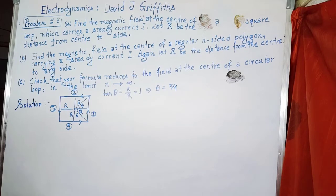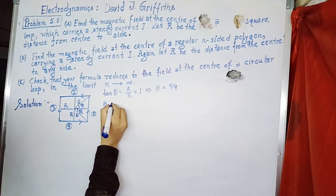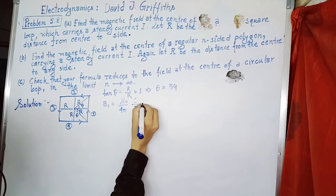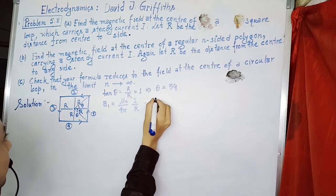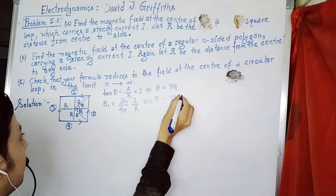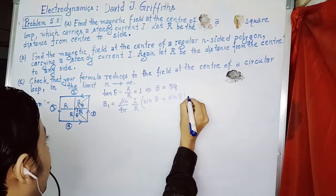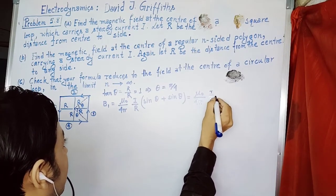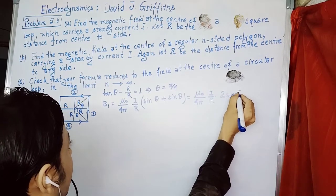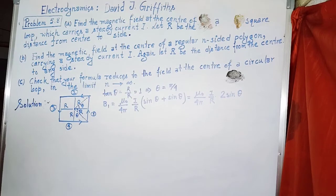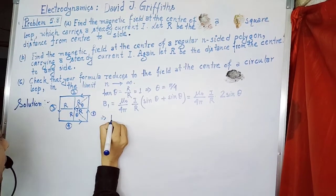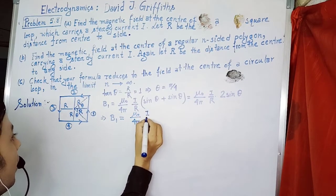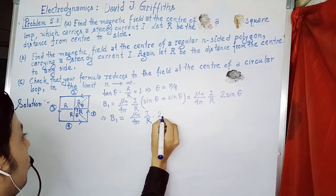The magnetic field produced due to the first segment, B₁, is given by the Biot-Savart result: μ₀ divided by 4π, times I upon R, multiplied by (sin θ + sin θ), because both angles are equal to θ. This gives B₁ = μ₀/4π · I/R · 2 sin θ. Substituting θ = π/4, B₁ = μ₀/4π · I/R · 2/√2.